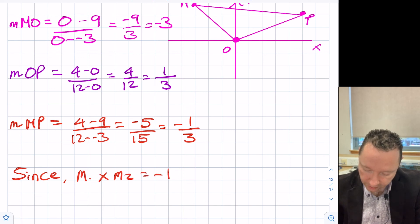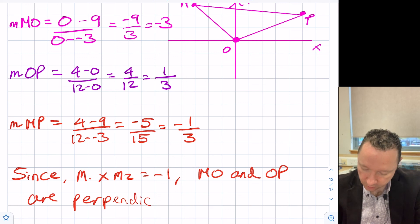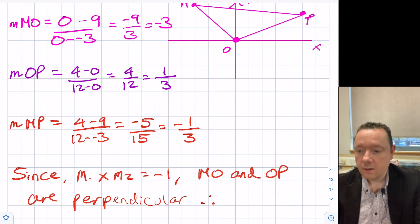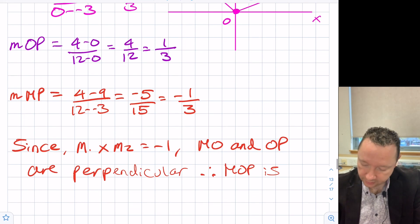And we can then say that since we always have to write this little statement, M1 times M2 equals minus one. Let's just check which two times to make minus one. Well, we've got a third. And flip that upside down, you get three and put a minus, that's minus three. So these two, MO and OP are perpendicular. And therefore, we can say that the triangle MOP is right angled.